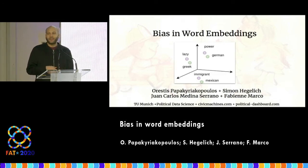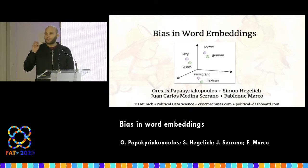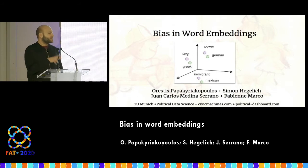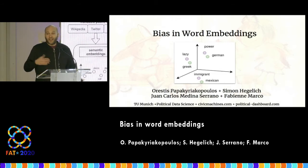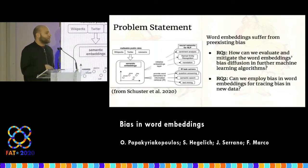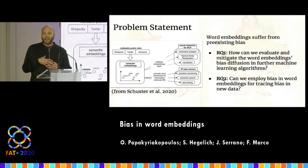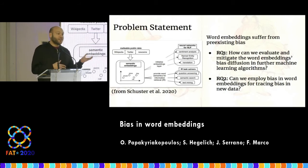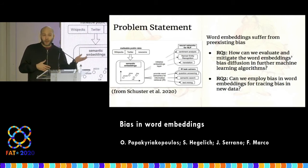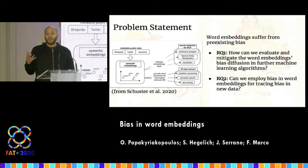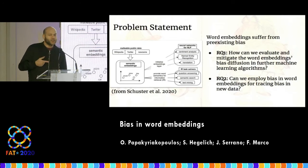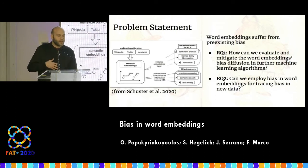What are word embeddings? They are NLP techniques that map words to vectors of real numbers that preserve semantic and syntactic properties of language. We care because these word embeddings are integrated in a lot of models. They are trained on freely accessible corpora, and the models trained with word embeddings are used for tasks like translation, search, question answering, text mining, and so on.